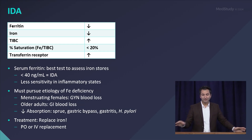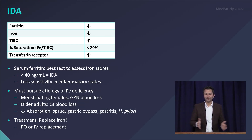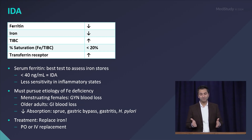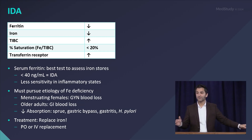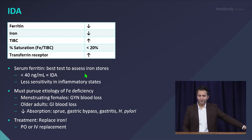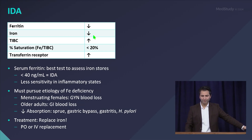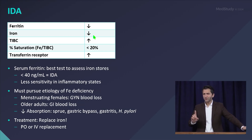The classic parameters in iron deficiency: you'll have a low serum ferritin, a low serum iron, an increased or elevated TIBC or transferrin, and a low iron saturation. This is pretty characteristic and you want to remember these findings.